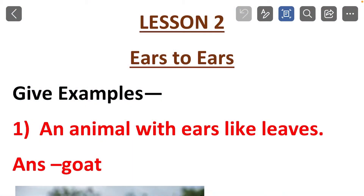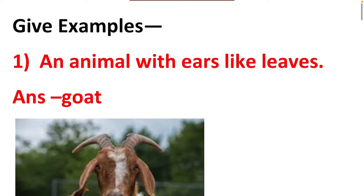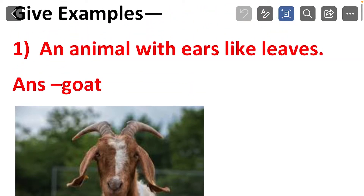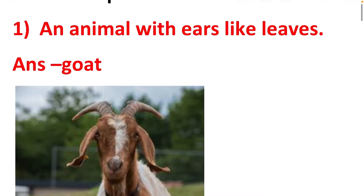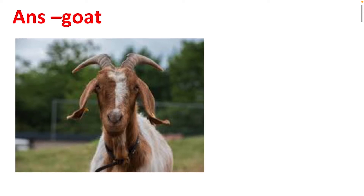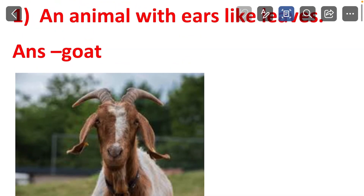Lesson 2, 'Ears to Ears.' Give examples. An animal with ears like leaves. Answer: goat. Observe the ears of a goat — don't they look like the leaf of a tree? So an animal with ears like leaves is a goat. Now you have to find out other animals also. Observe the animals around you and see which animals have ears like a leaf.